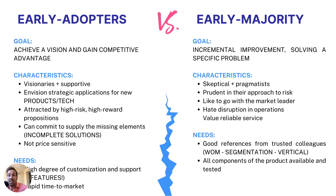On the opposite side, the early majority has nothing to do with that. They are really skeptical and pragmatist in their approach to technology — prudent, more risk-averse, and they hate disruption in operations. So think about your product: if it's disruptive to their day-to-day, we're probably going to have problems crossing to the early majority and going mainstream.